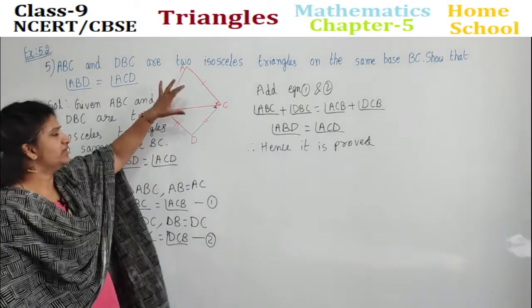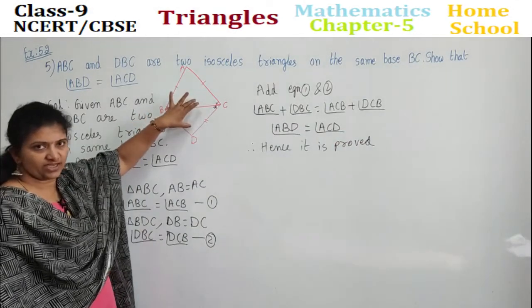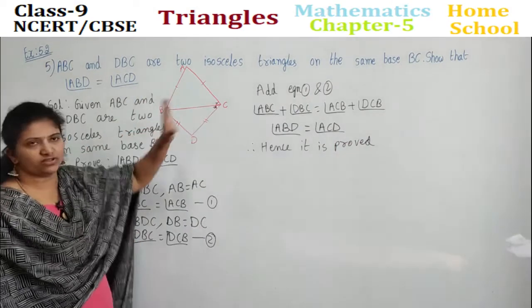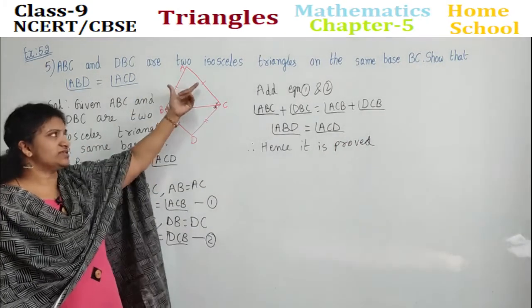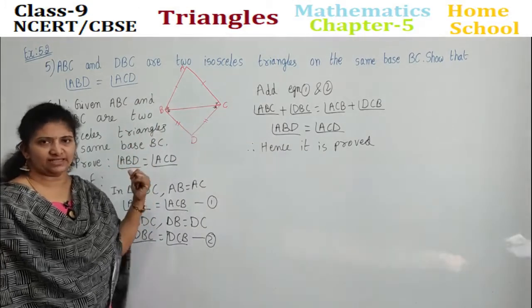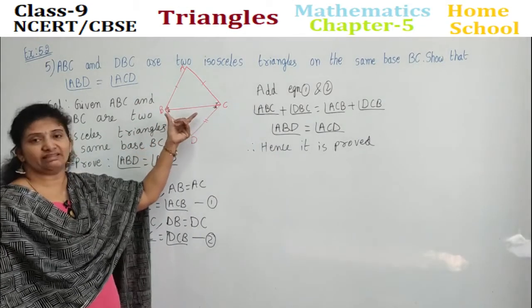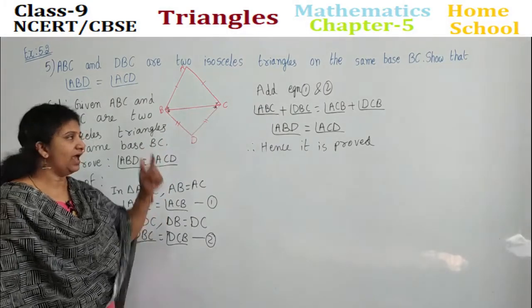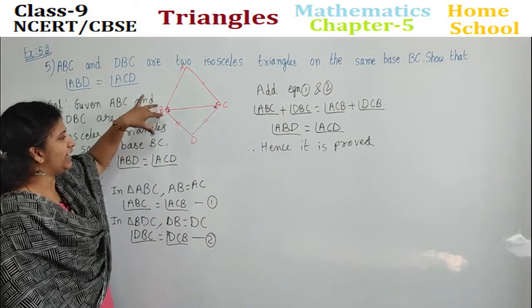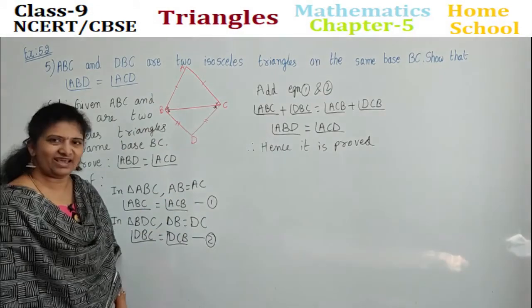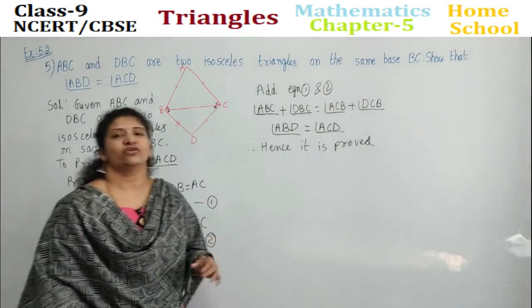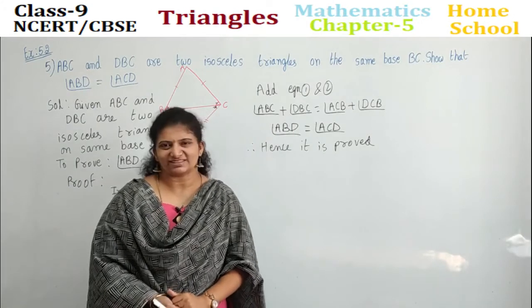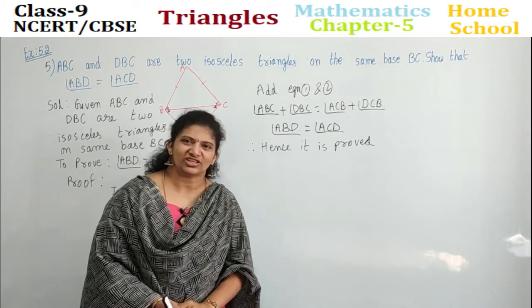Observe once again: there are two isosceles triangles on the same base. In the first isosceles triangle, sides are equal so opposite angles are equal — mark equation 1. In the second triangle, opposite angles are equal — mark equation 2. Adding 1 and 2, we get angle ABD is equal to angle ACD. With this we are ending our session. In our next session we will complete this exercise. Until then, keep watching. Thank you all.